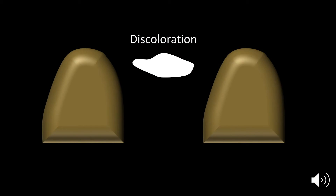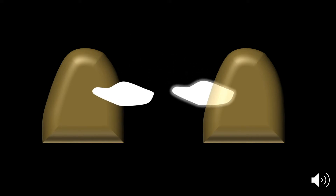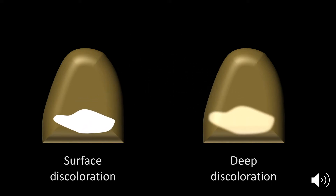First, the location of the discoloration within the tooth must be determined. Discolorations located on the surface of the tooth are more easily removed with microabrasion. Discolorations that are on the surface of the tooth will typically appear opaque with defined borders. Discolorations deeper within the tooth will appear murky with poorly defined borders.